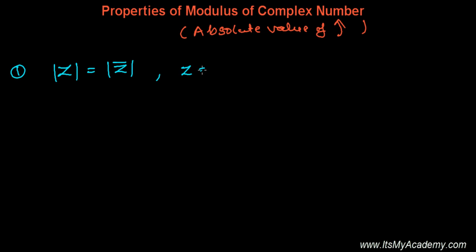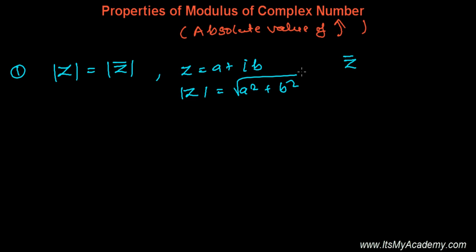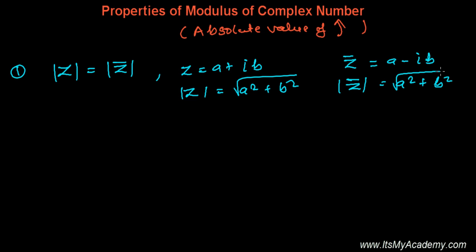Let's say Z is a complex number A plus iB. Then the absolute value of Z will be the square root of A squared plus B squared. Similarly, the conjugate of Z is Z-bar, which is A minus iB. The absolute value of the conjugate is also the square root of A squared plus B squared. Since both have the same real and imaginary parts, just differing in sign, absolute value of Z equals absolute value of Z-bar. This is the first property of the modulus of a complex number.